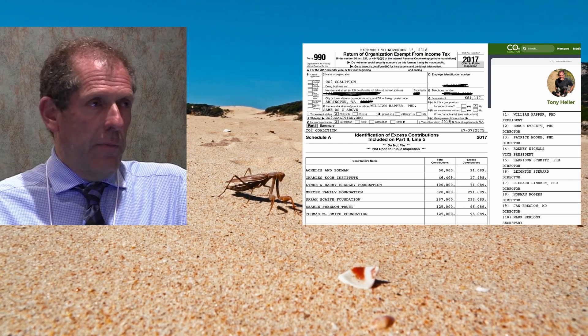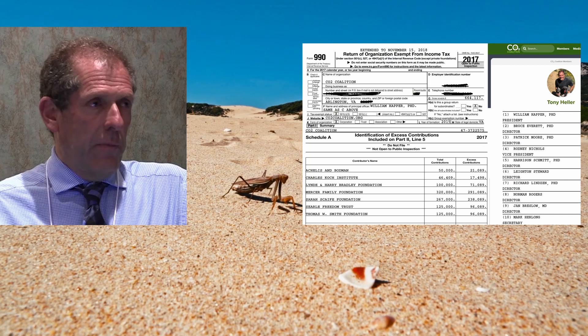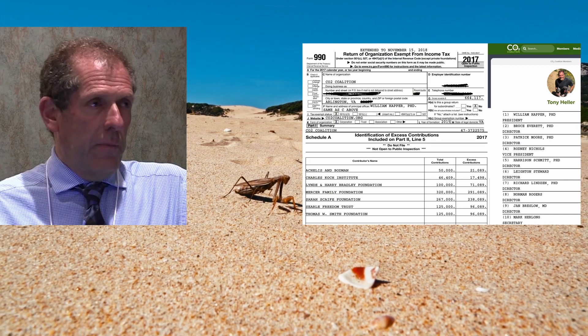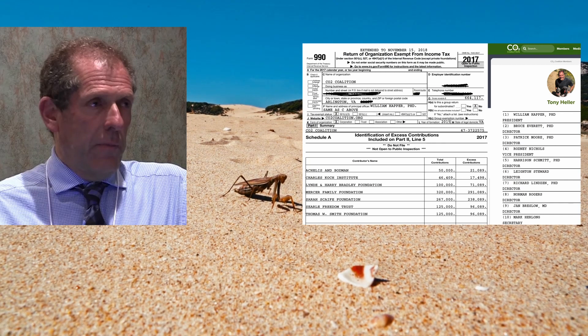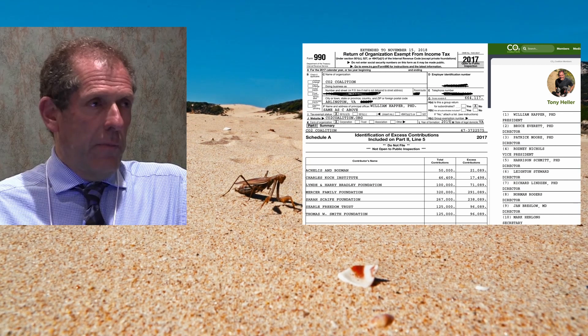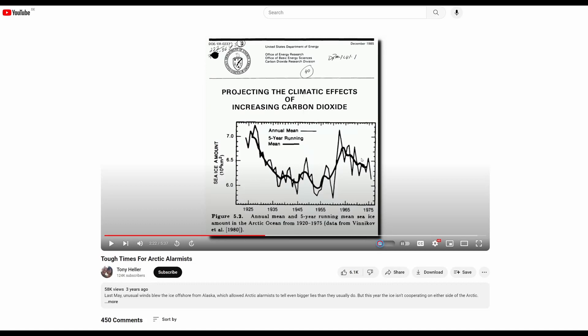Some time ago, Heller blocked me from commenting on his social media after I discovered an elaborate trick he was using to confuse his followers. Tony used this image, claiming it showed that Arctic sea ice was lower in the last century than this century.